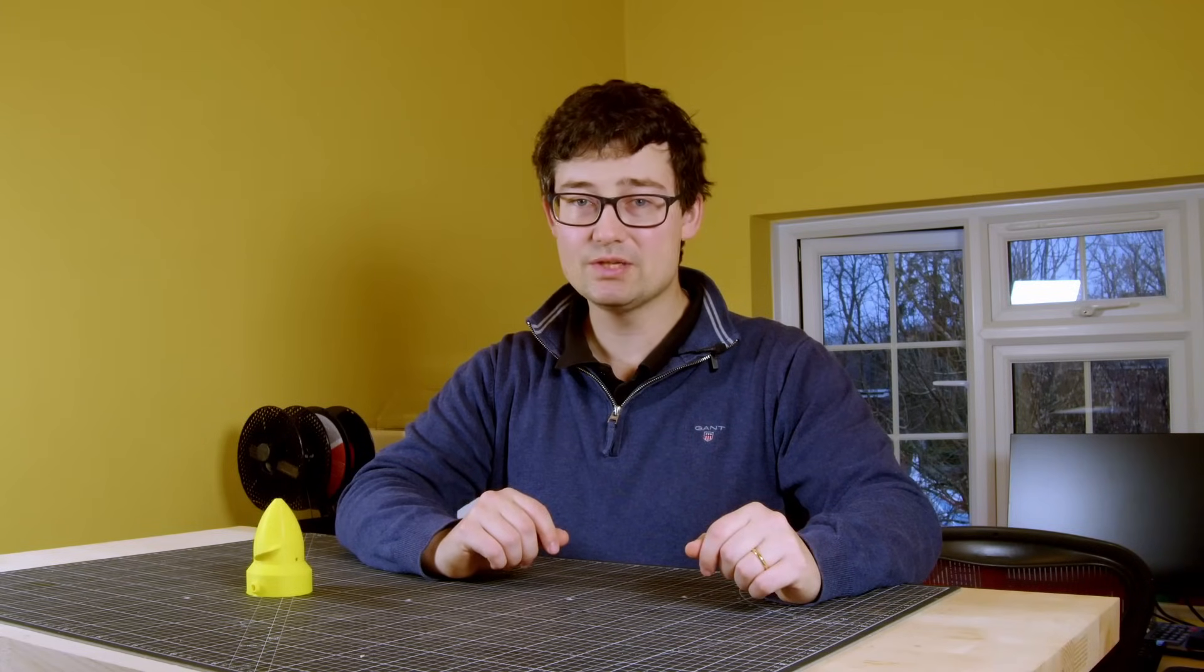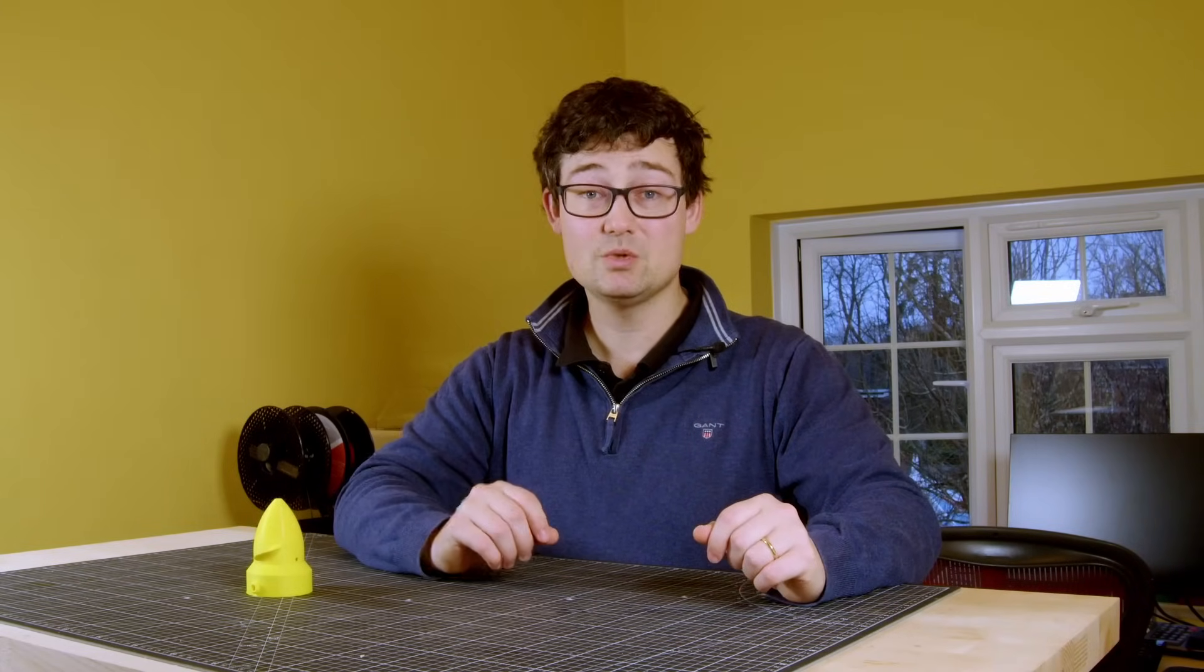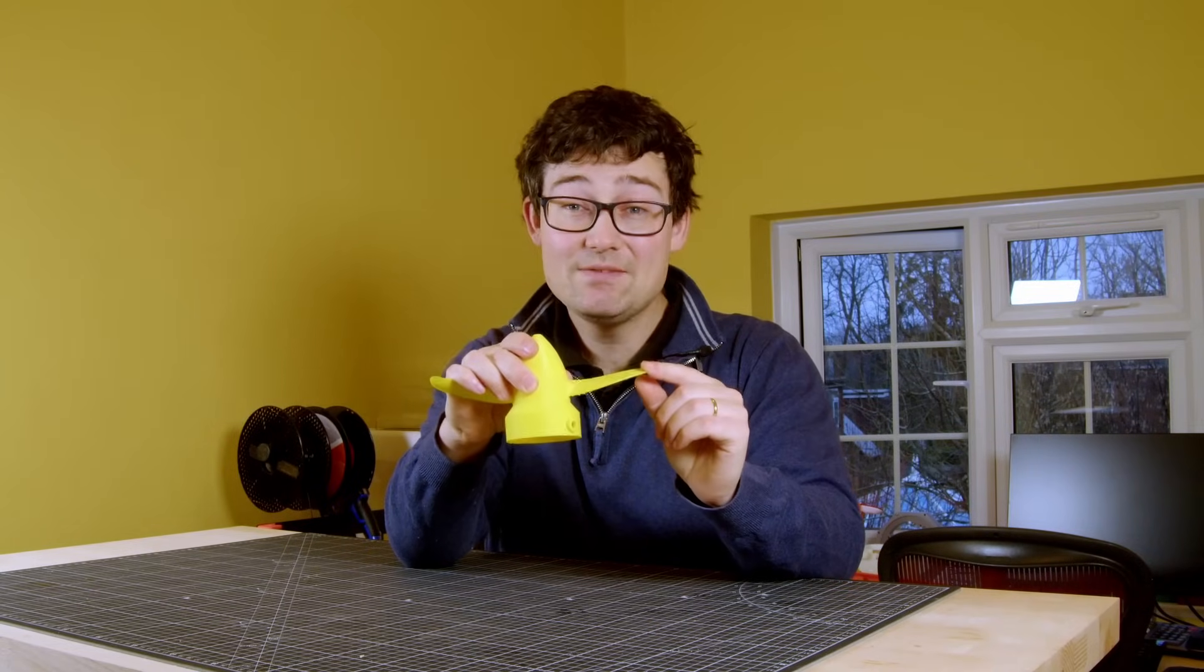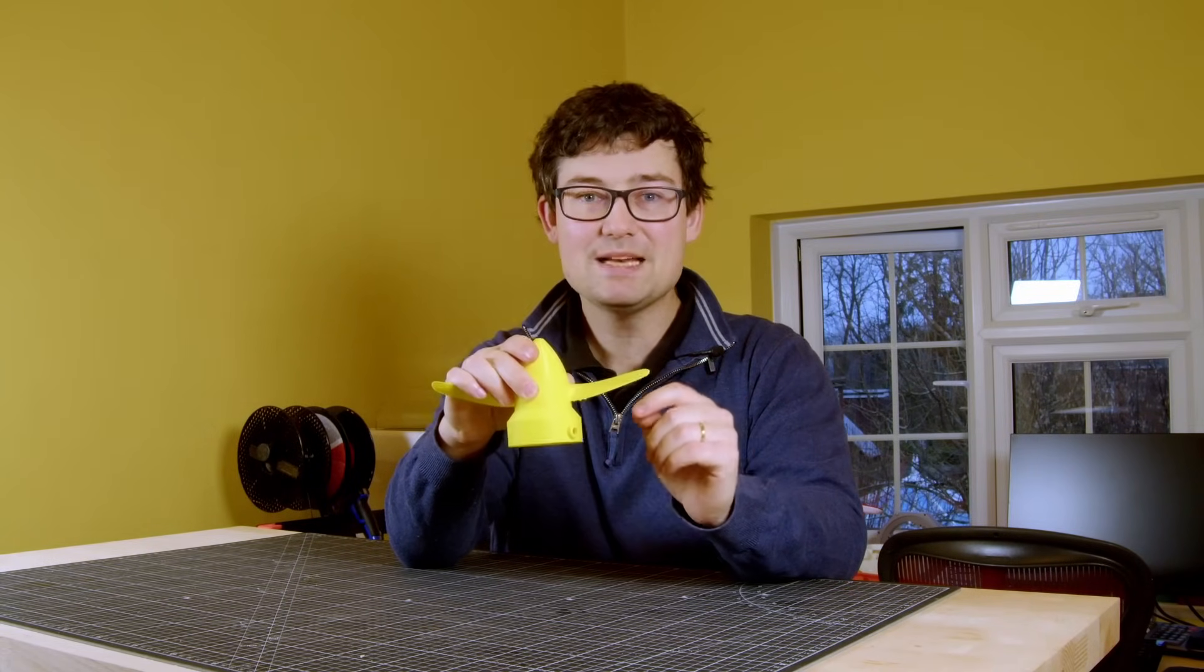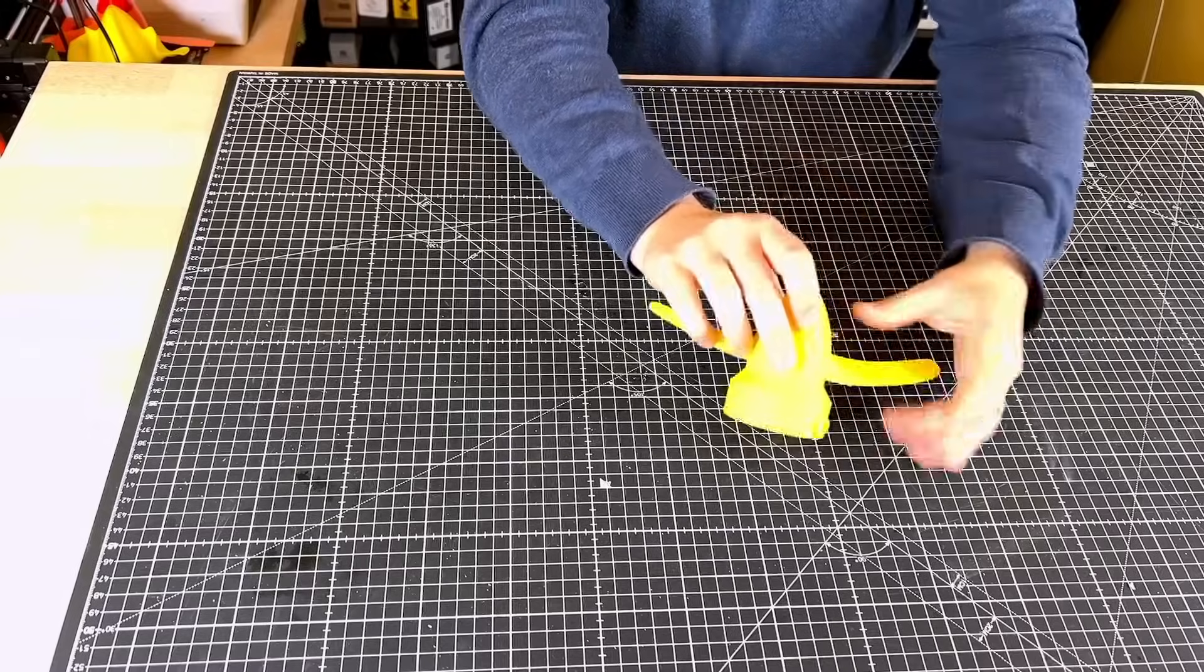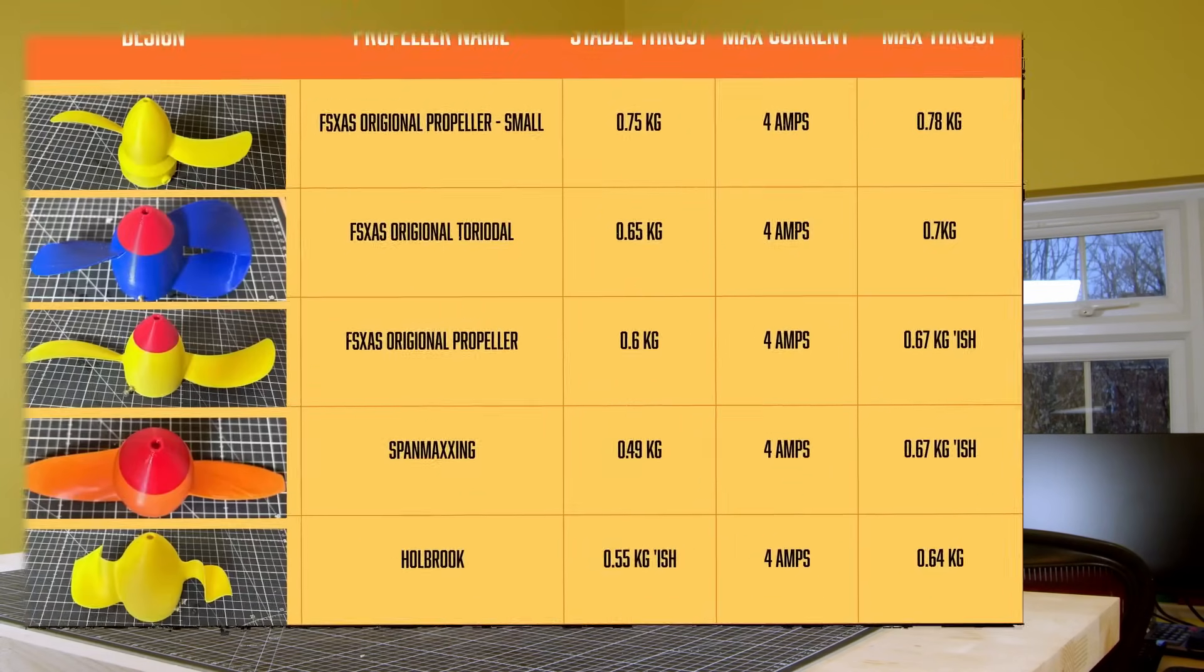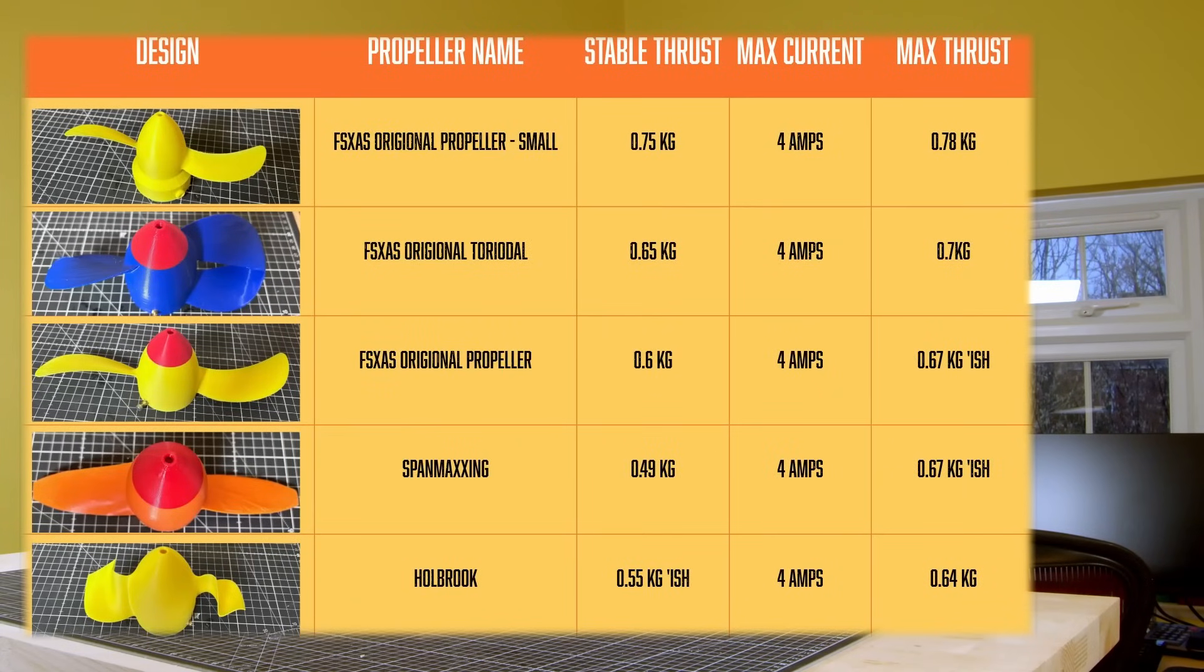So we're absolutely getting more thrust from the smaller diameter. The sweepback blade design has the thinnest cross section, which I think, given it was only printed in PLA, might have led to some unwanted resonance in the blades. So here you can see the constant and max thrust values for each of the propellers tested.